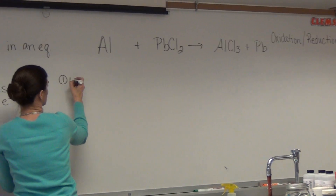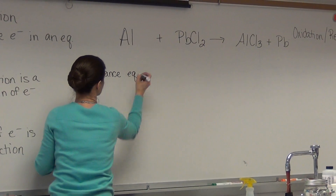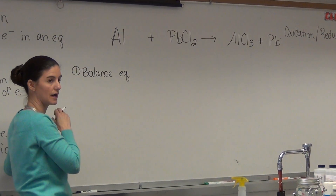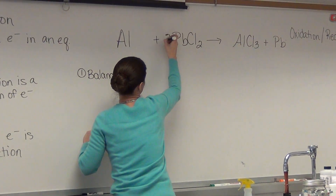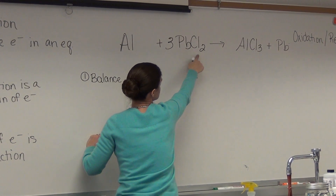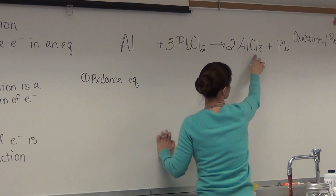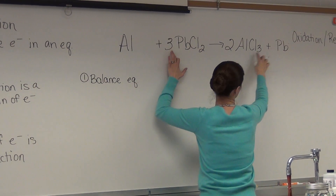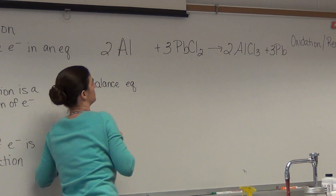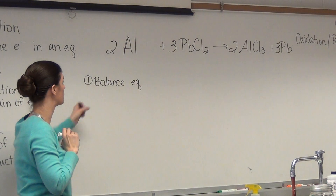Step one: balance your equation, just like we've done before — balance out both sides. We put a three in front of PbCl₂, giving us three leads and six chlorines. We put a two in front of Al and AlCl₃, giving us two aluminums and six chlorines. So we need three leads and two aluminums.